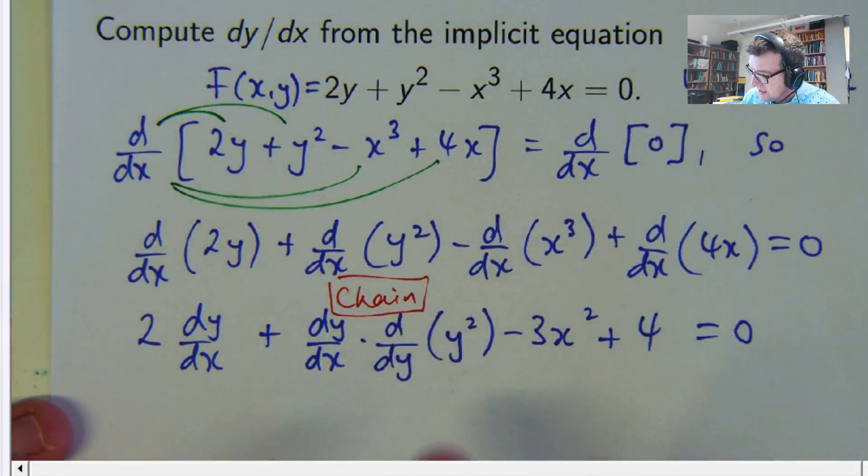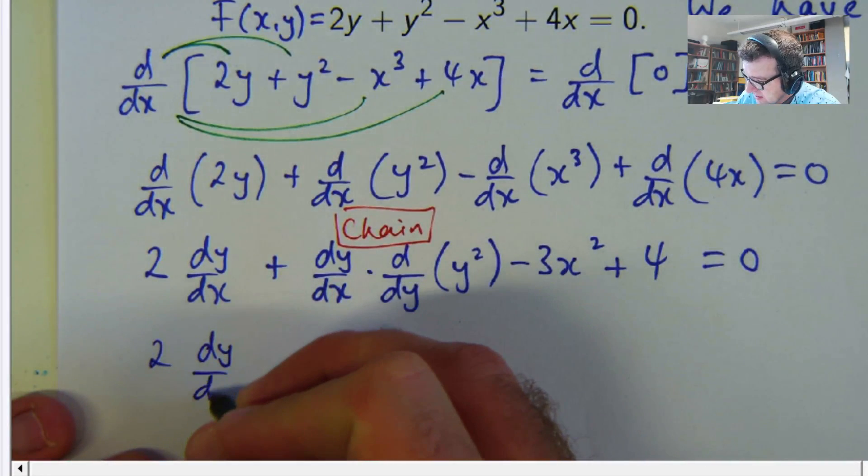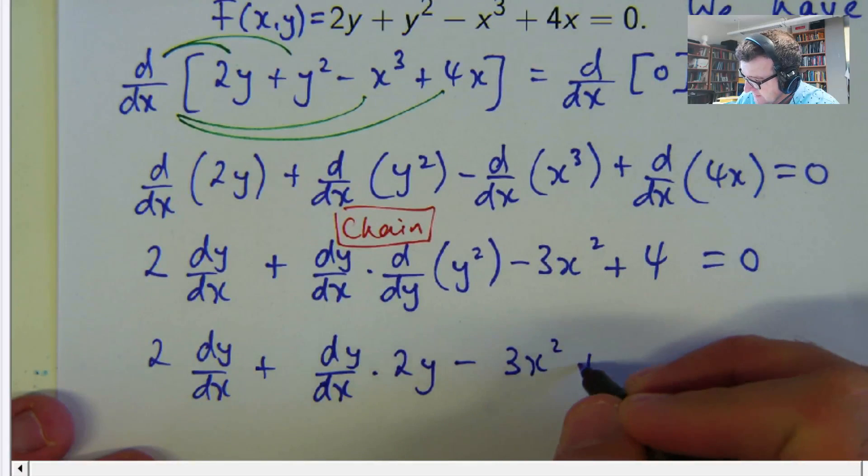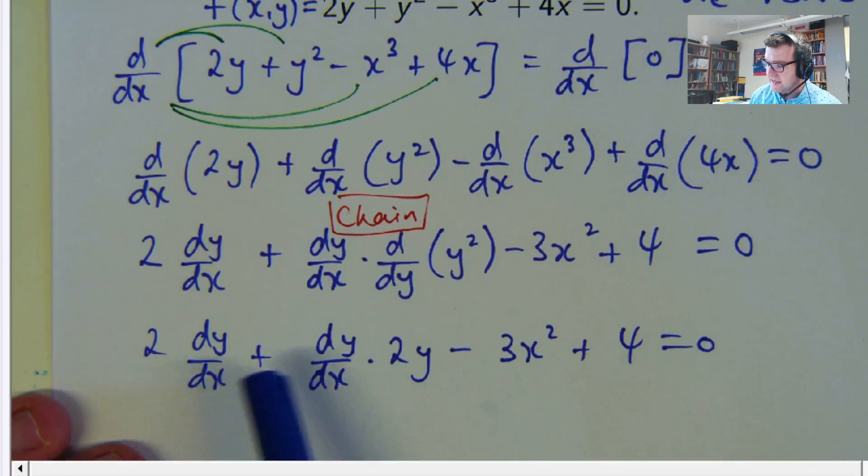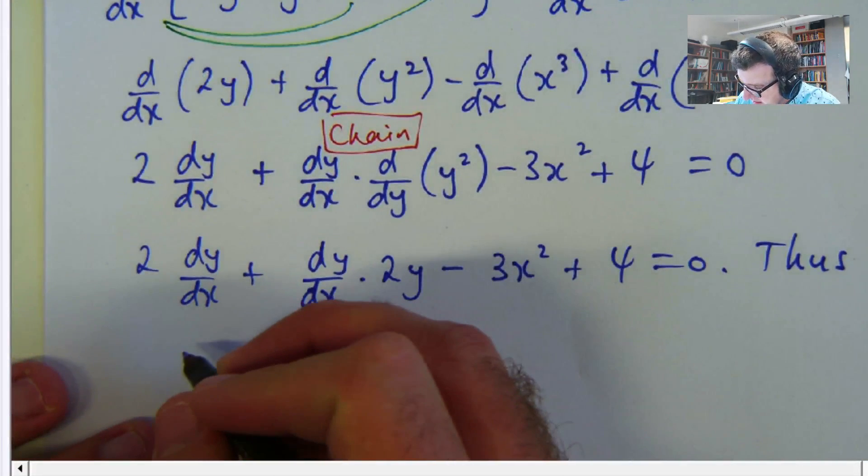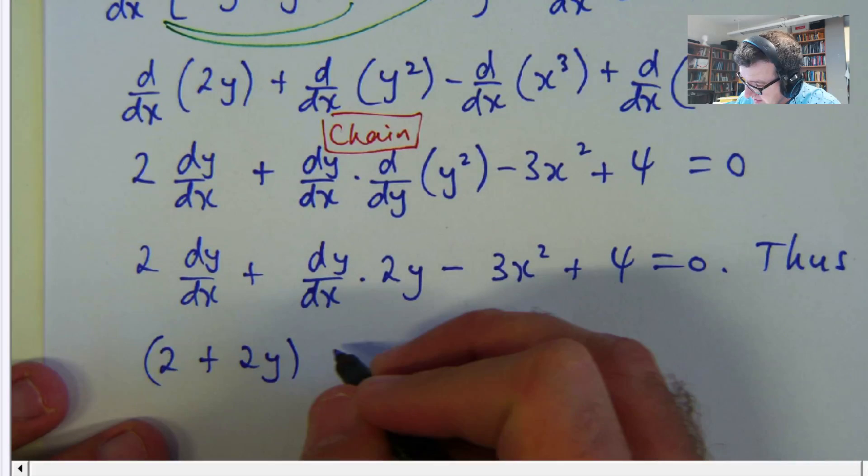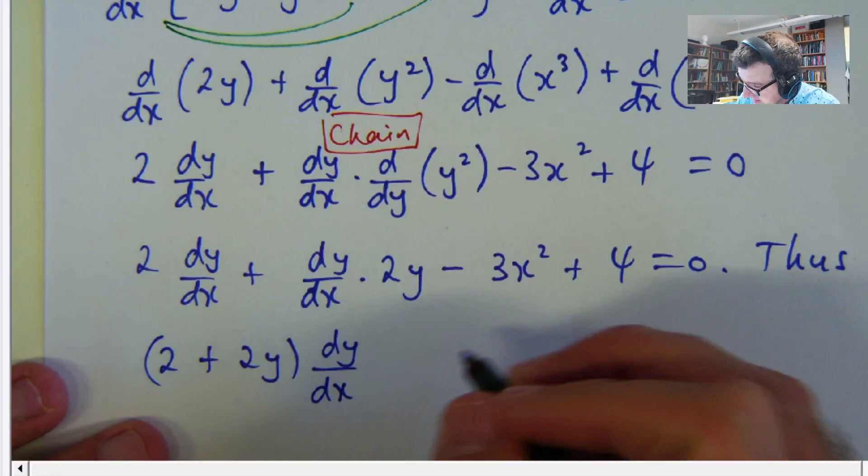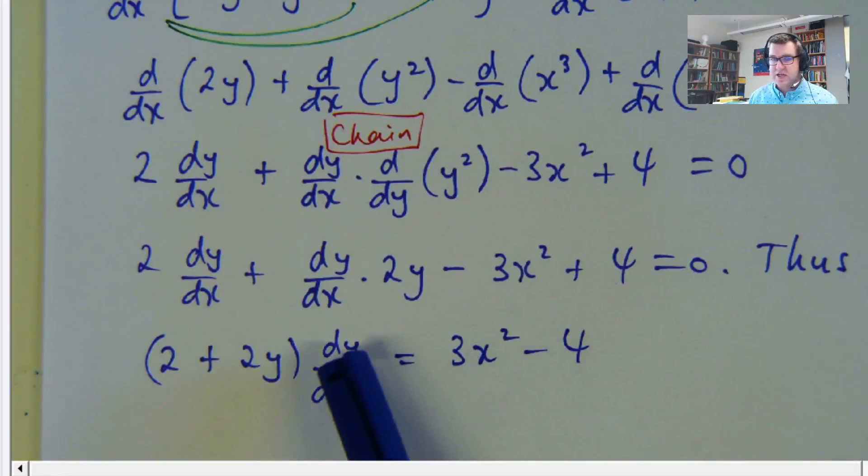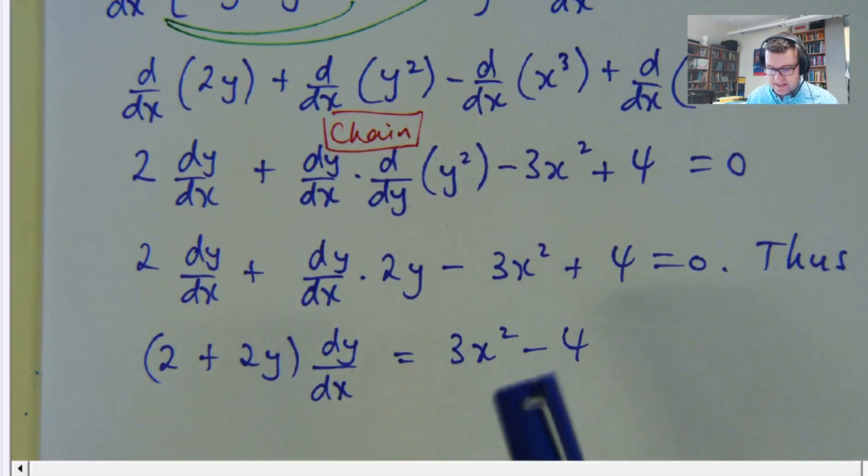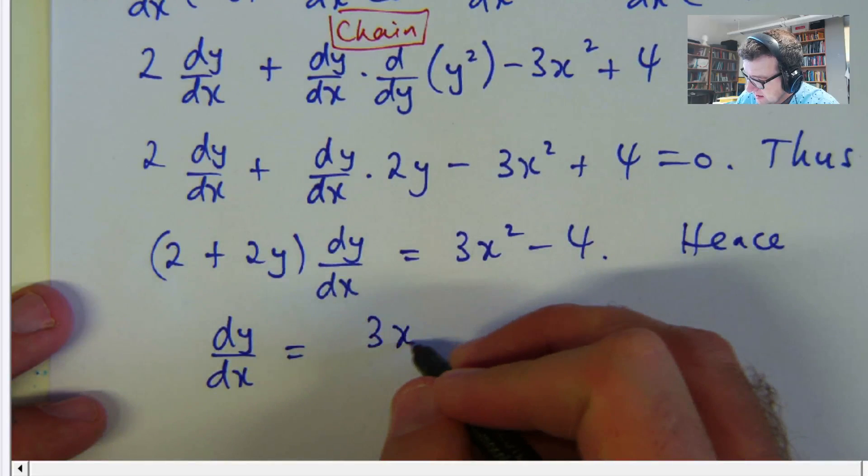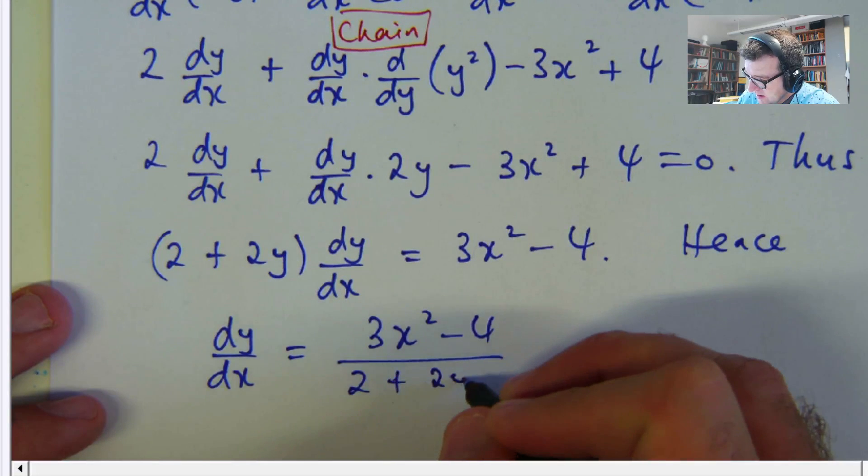So we have this is going to become 2y. Okay we've got a common factor of dy dx there, I can move these guys to the other side. So let's do that. I've got a common factor of 2y actually but that's fine. So that's going to go to the other side, that's going to go to the other side. And so we can now just make dy dx the subject by dividing this out here. Hence this is our expression.